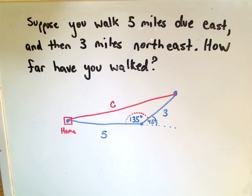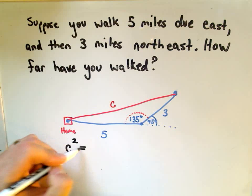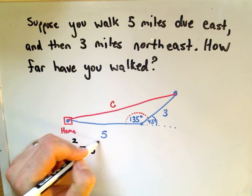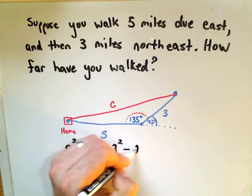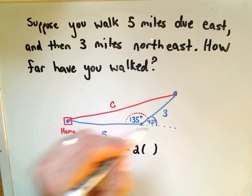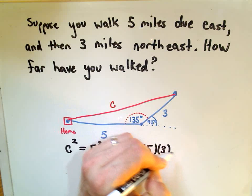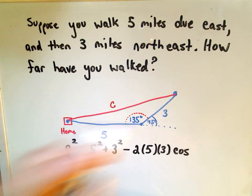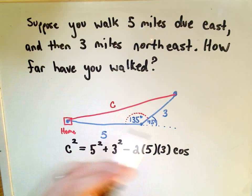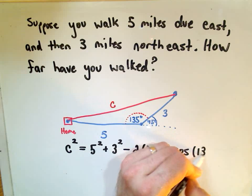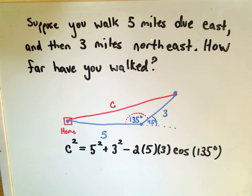Now all we have to do is just set up the problem and grind away on it. It says C squared, that's the side we're interested in finding. C squared equals 5 squared plus 3 squared. Then we always subtract 2 times the sides that you know, 5 and 3. And then we take cosine of the angle that's opposite of the side that we're trying to find, so cosine of 135 degrees.